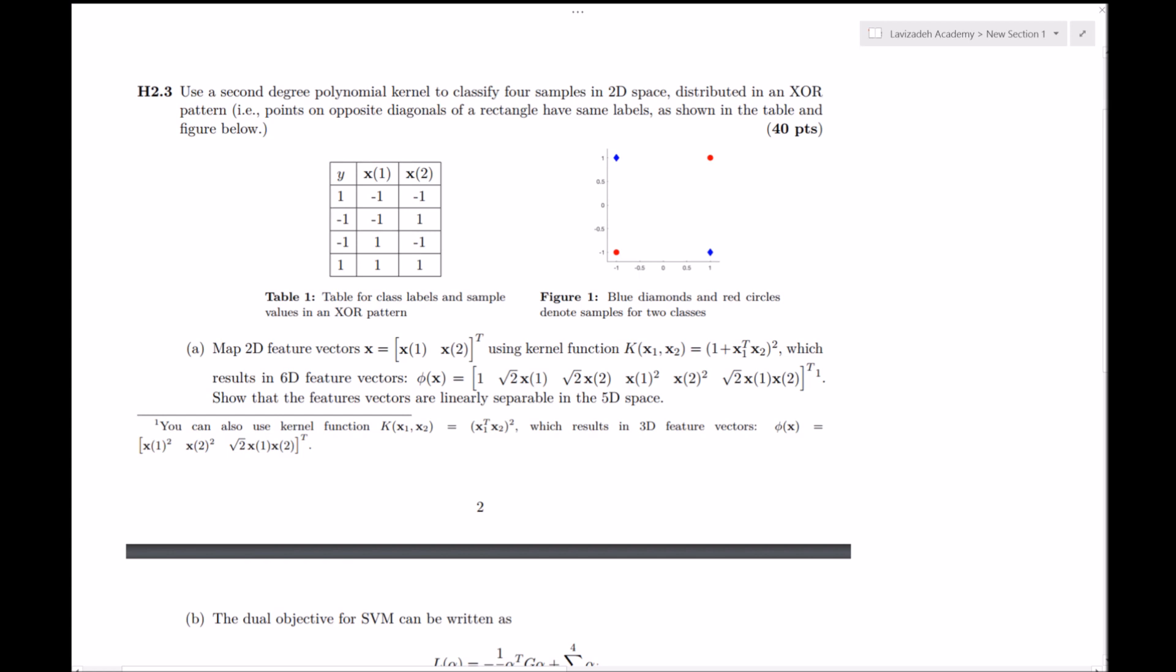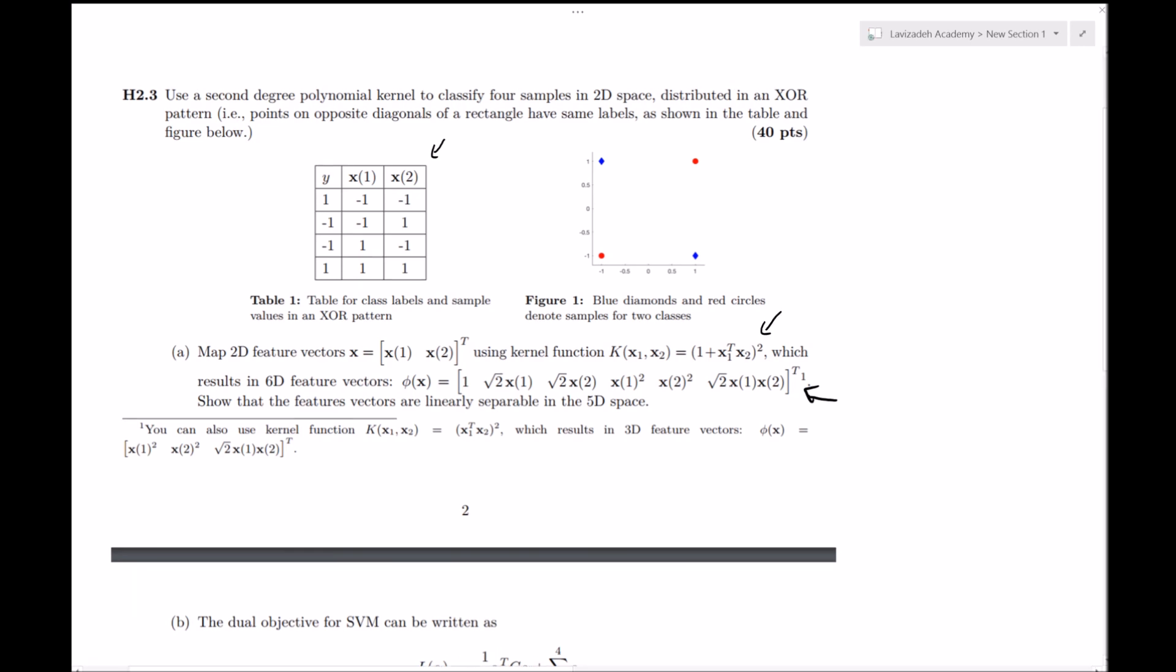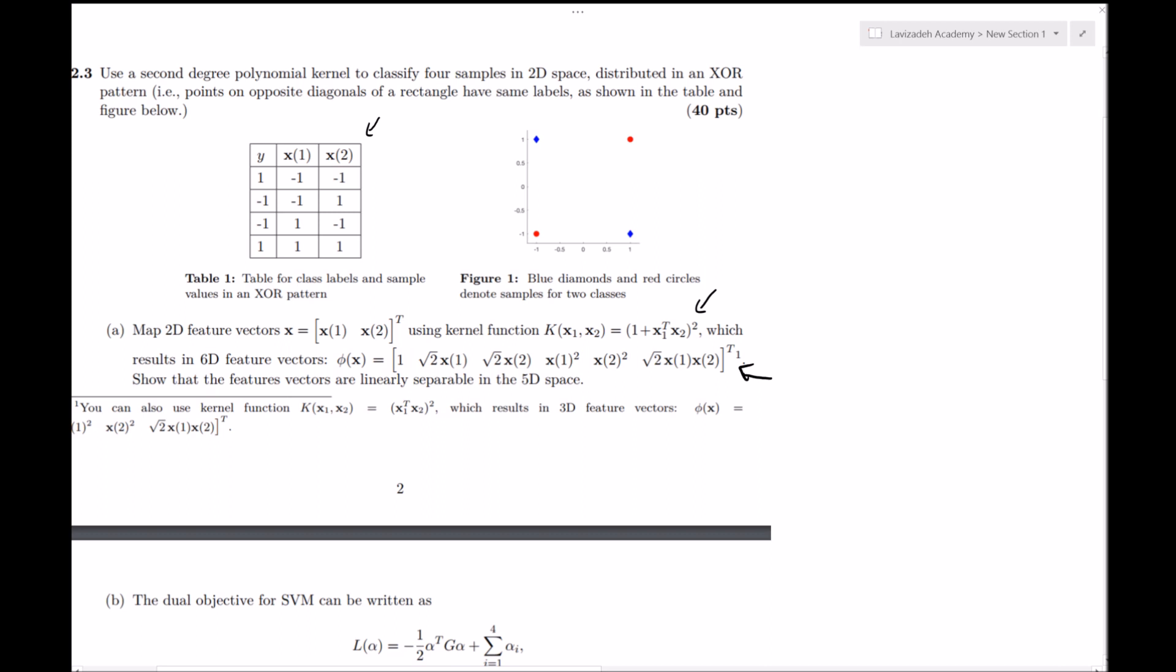So this is a special mapping where you take each data point and you use this mapping function to get your new feature vector. This mapping function is defined by this kernel function, and you might be thinking, okay, well how is that kernel function related to this new feature vector? It's not too important for this problem how they're related.